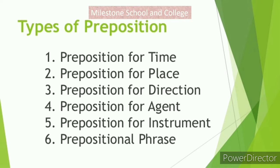There are different kinds of prepositions: preposition of time, preposition of place, preposition of direction, preposition of agent, preposition for instrument, preposition of purpose. 'Agent' means the doer — the person who has done any work. These are the basic types of preposition.